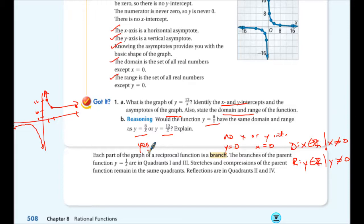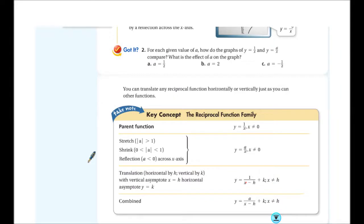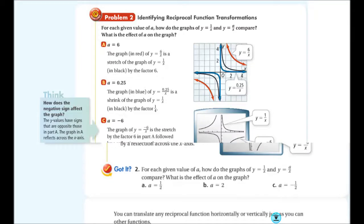Each part of the graph of reciprocal function is called a branch. So, when we talk about these, we'll call them branches. The branches of the parent function y equals 1 over x are in quadrants 1 and 3. Stretches and compressions of the parent function remain in those quadrants. But then, when we reflect it with a negative sign, we can move them to quadrants 2 and 4. So, let's take a look at that.